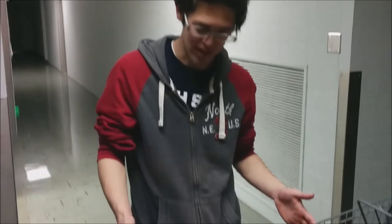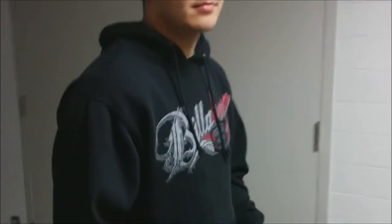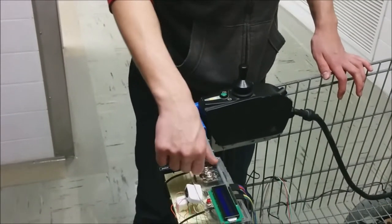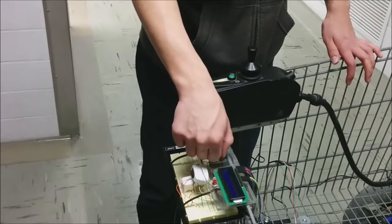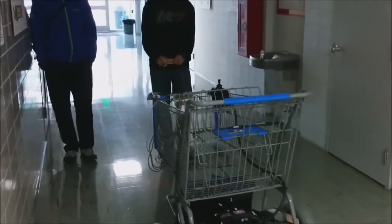Now we're going to demonstrate the movement part of the shopping cart. We have Tyler here holding the IR source. What's going to happen is the camera sees the IR source and adjusts the movement of the motors. Right now we turn on the left, right, and the front back. Watch it go.